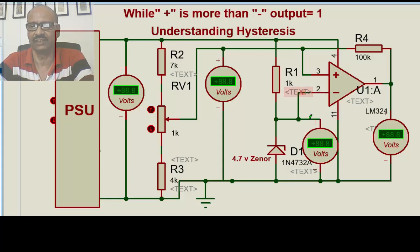This is the inverting terminal. The inverting terminal is given a fixed voltage by a Zener diode of 4.7 volts. This is given at 4.7 volts and the non-inverting pin is given to a supply voltage through a potential divider.